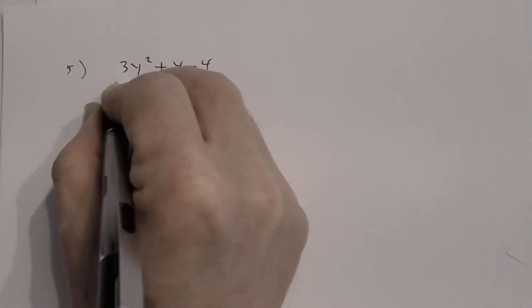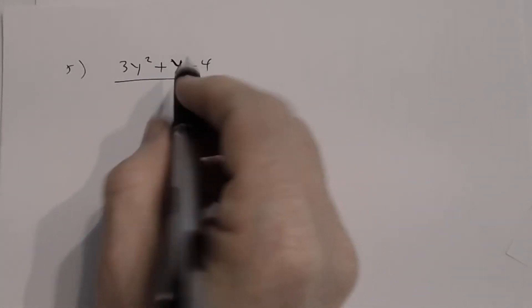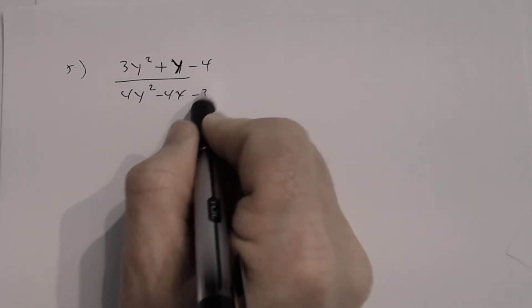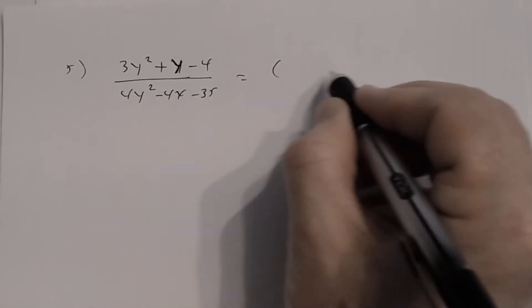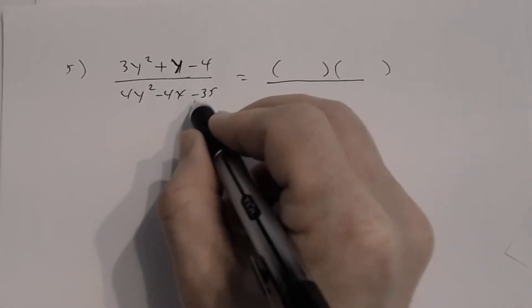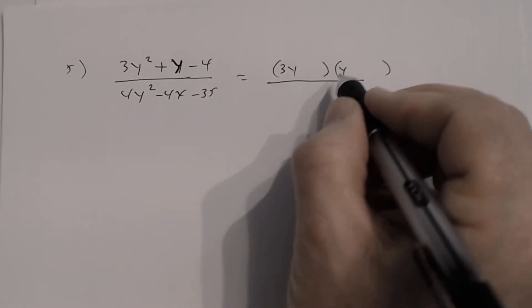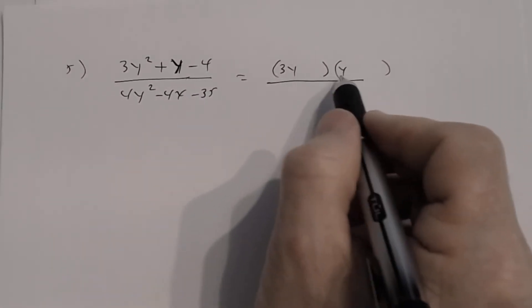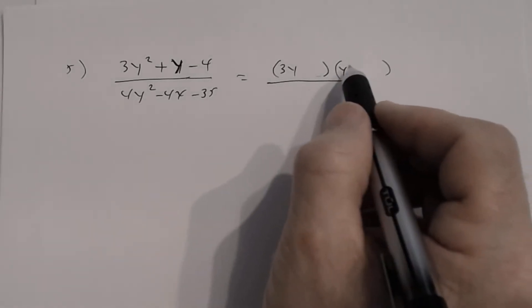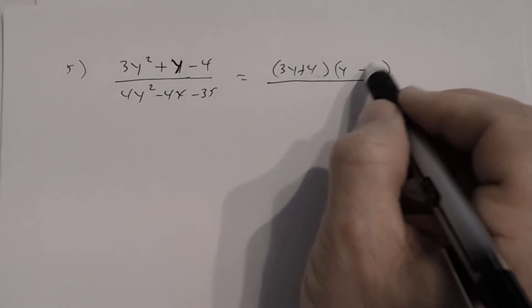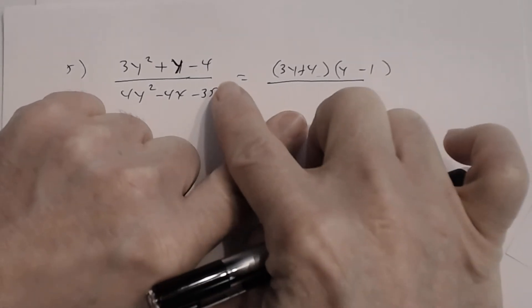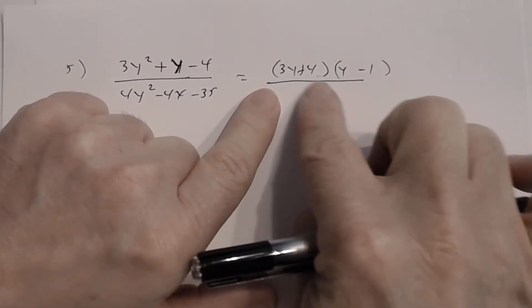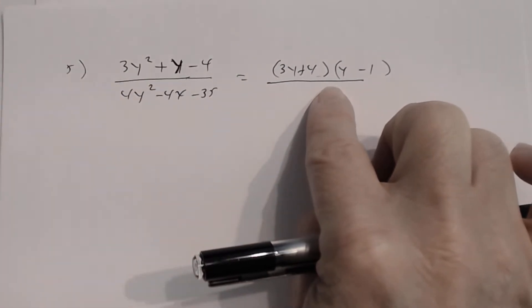Number five: (3y² + y − 4) divided by (4y² − 4y − 35). For the numerator, GCF is 1, so go to two binomials: 3y and y, last sign is negative so signs are different. Trying +4 and −1: double-check 3y·y = 3y², 4·(−1) = −4, outer −3y + inner 4y = +y. ✓